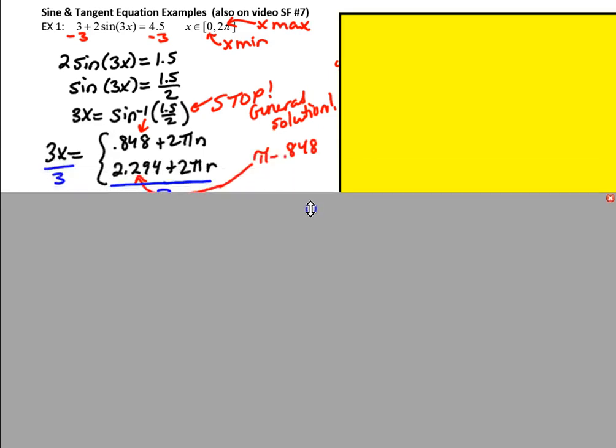So notice on the left-hand side we still have 3x, but on the right-hand side we have inverse sine of 1.5 over 2, which is 0.848 on the calculator. And then the second solution is not negative 0.848 like it was for cosine, because sine is an odd function. It doesn't look the same on both sides of the y-axis. So the other part of the curve that has the same solution is actually π minus 0.848, the supplement of this angle. So the second solution is π minus the first, and then plus 2πn to add the period to both of those.